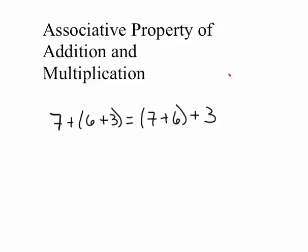The same thing is true for multiplication — the grouping does not matter. I could do (8 times 4) times 2, which would be the same thing as 8 times (4 times 2). The order remains the same; the numbers are written in the exact same order, but the groupings have changed in both places.